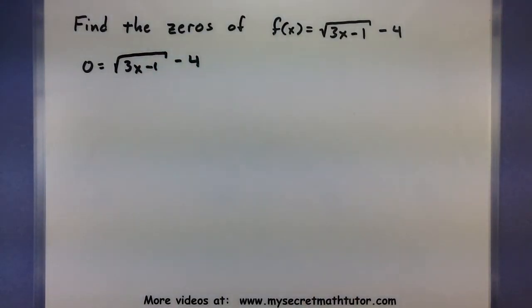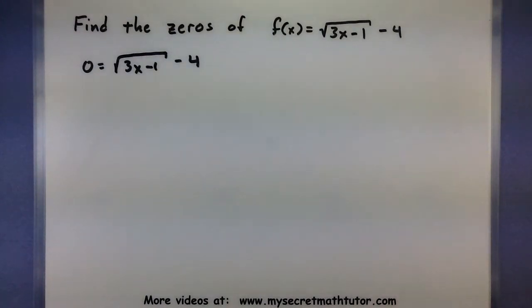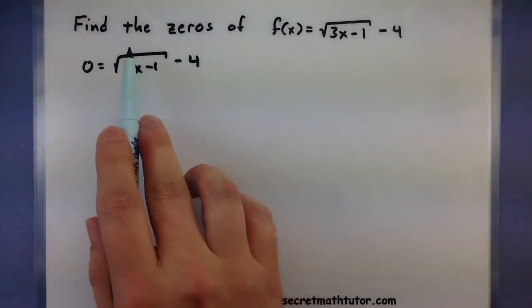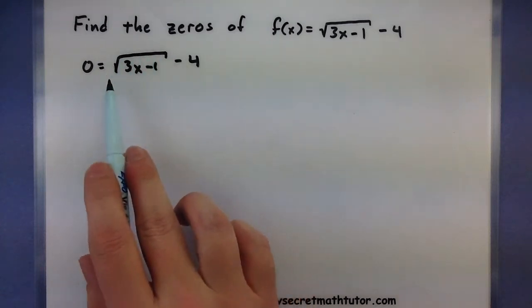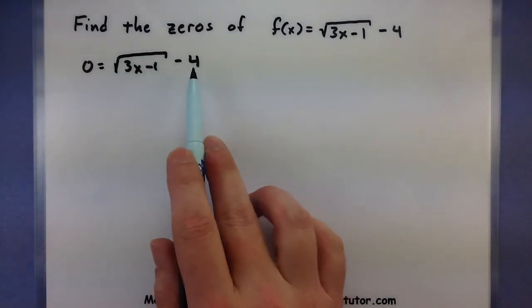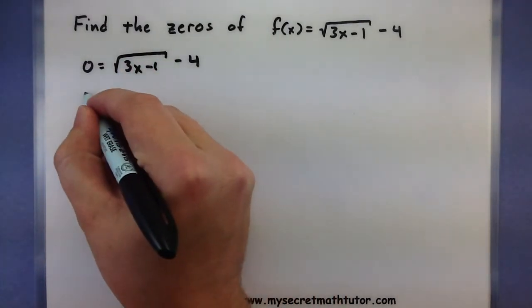Now to solve radicals in general, I want to isolate the root, square both sides, and get x all by itself. So let's start off by isolating this root by adding 4 to both sides.